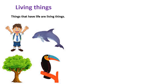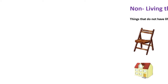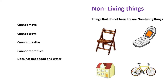Living things can move, can grow, they need food and water, they can breathe, and can reproduce. Non-living things cannot move, grow, breathe, or reproduce, and they do not need food and water.